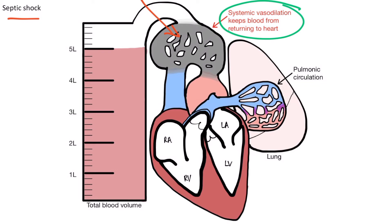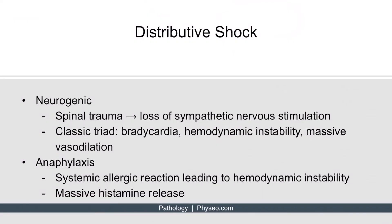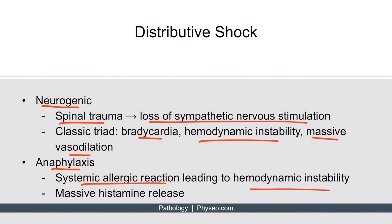This actually makes septic shock the black sheep of all of the types of shock — no other type of shock increases cardiac output. In neurogenic shock, which occurs due to trauma to the spine, there is a loss of sympathetic nervous stimulation and also unopposed vagal stimulation, which leads to bradycardia. Bradycardia, hemodynamic instability, and massive vasodilation are the classic triad of neurogenic shock. Anaphylaxis is a severe systemic allergic reaction leading to hemodynamic instability; the decreased systemic vascular resistance is primarily due to massive histamine release from mast cells after activation by antigen-binding immunoglobulin E, as well as increased synthesis of prostaglandins.